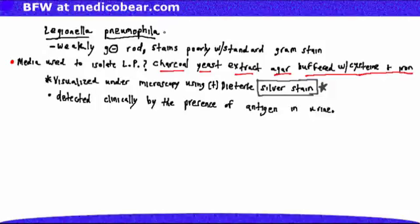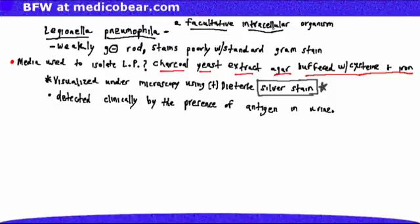Legionella pneumophila is a facultative intracellular organism, which means that it can live and reproduce either inside or outside of the host cell. Can you think of any other bacteria that are also facultative intracellular?